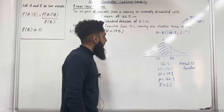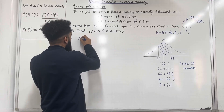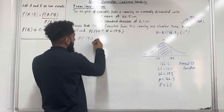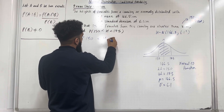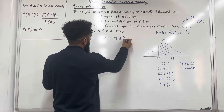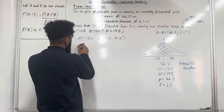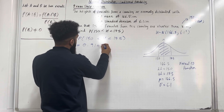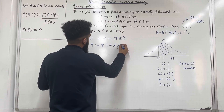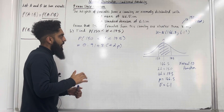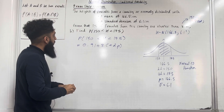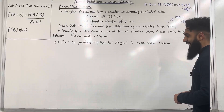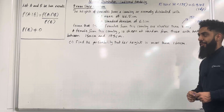Using my normal CD function, I get that the probability of the height being between 150 and 175 is equal to 0.9148 to 4 decimal places. That there completes part B of the question. Moving on to the last part of the question.